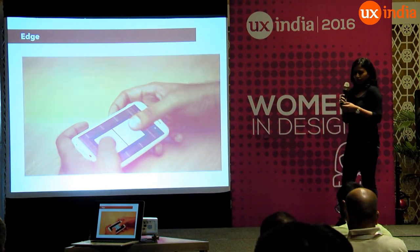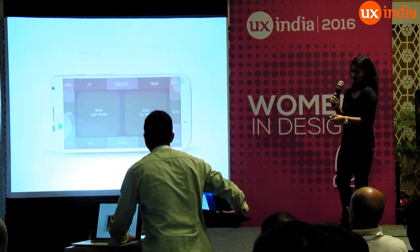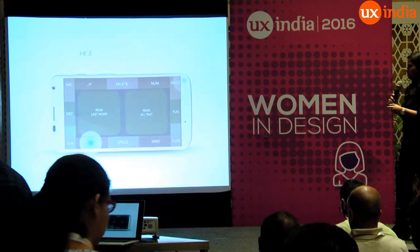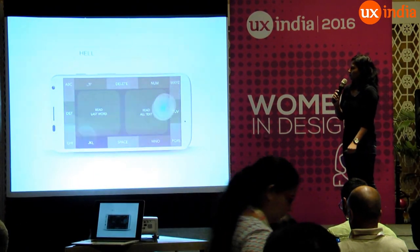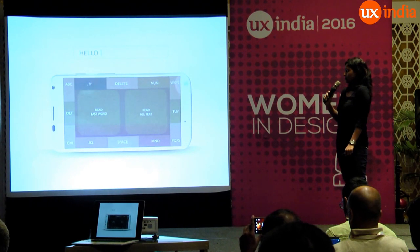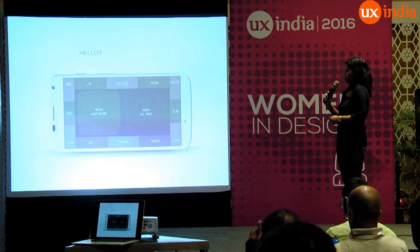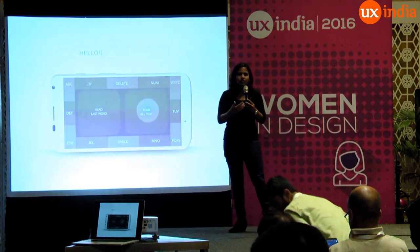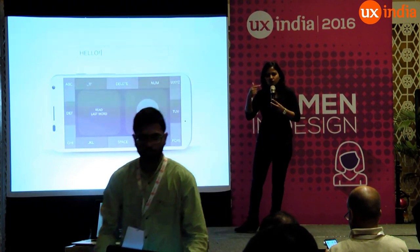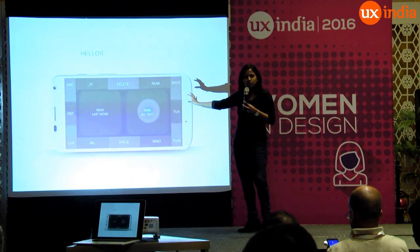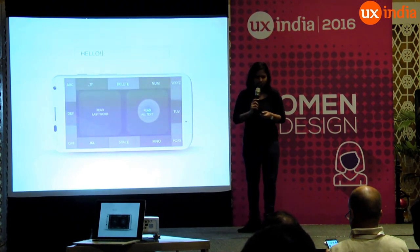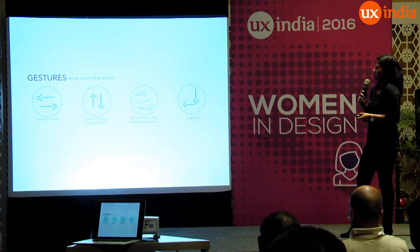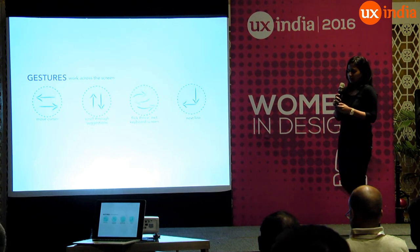Here is the demo — this is how you would hold it and move your thumbs up to type. Another feature we added was context cue. When you are typing, if you want to know where you are in the sentence, you normally look at your phone. In the absence of that, we substitute it with an alternate way to find out exactly what you are typing. We also designed gestures to move the cursor when editing text, and to scroll through suggestions.